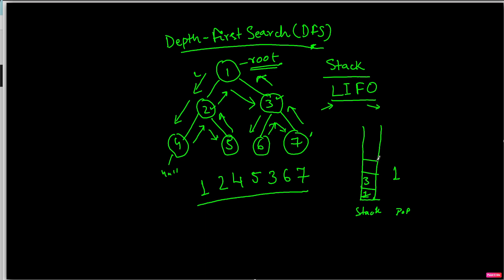So we add three and two. Now when we pop from the stack it would be two, so we'll print two and add the children of two, which are four and five. So five and four are added to the stack. Next time we pop, we'll pop four.